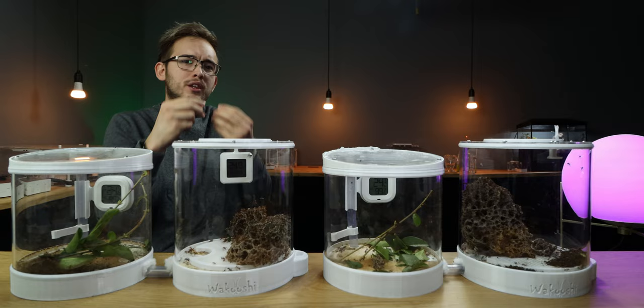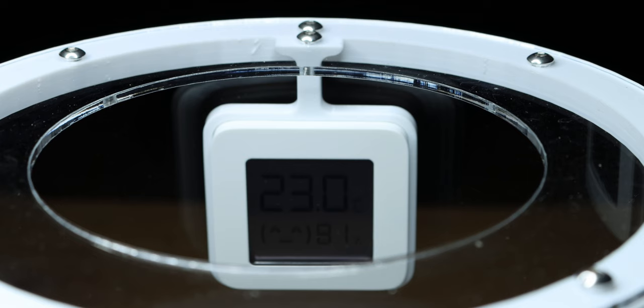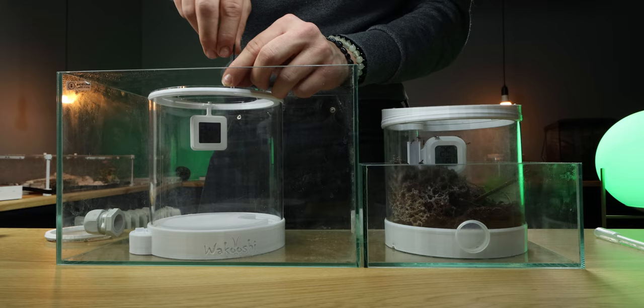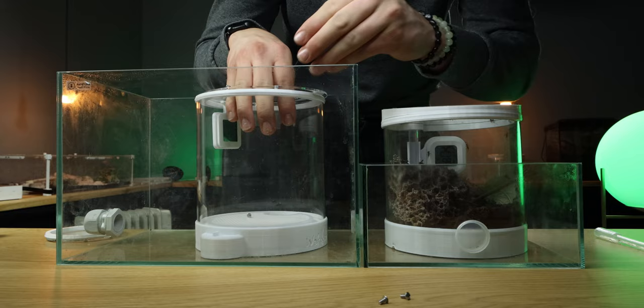If the lid is too small to get the fungus inside the container, the whole top of the lid can simply be removed using an allen key that comes with the pot. Simply unscrew the top screws and replace when the fungi is inside once more.